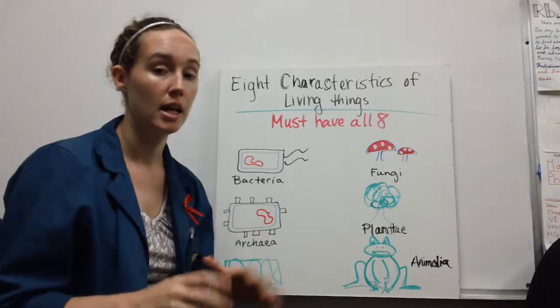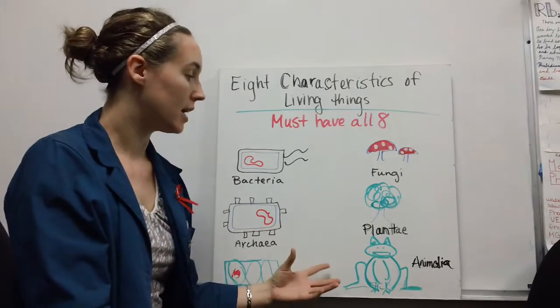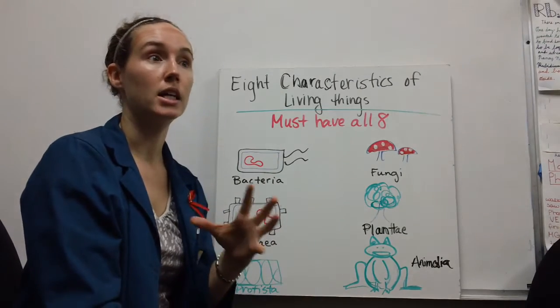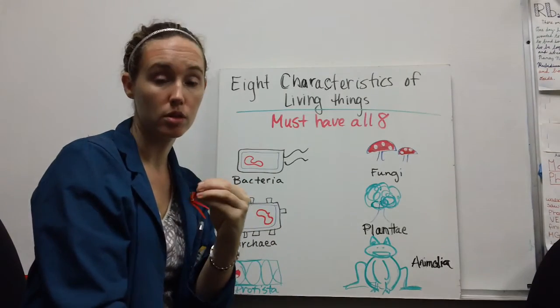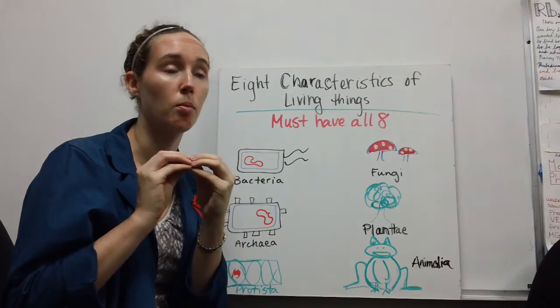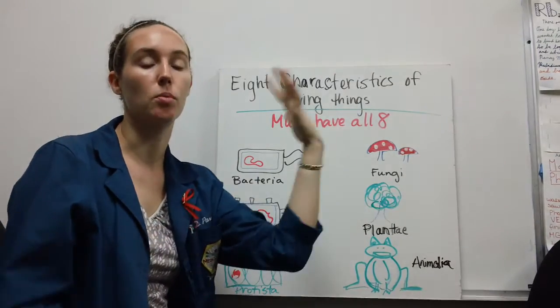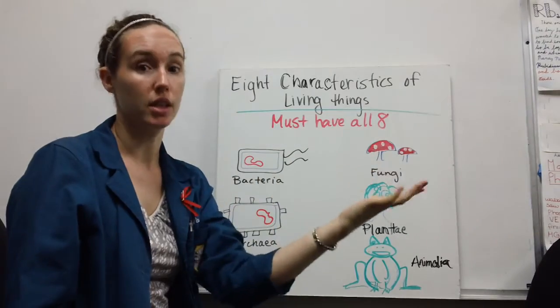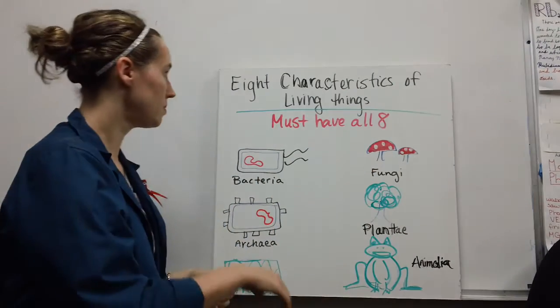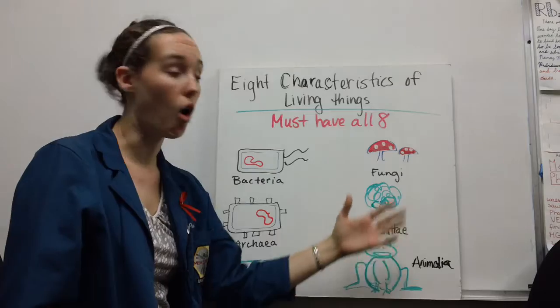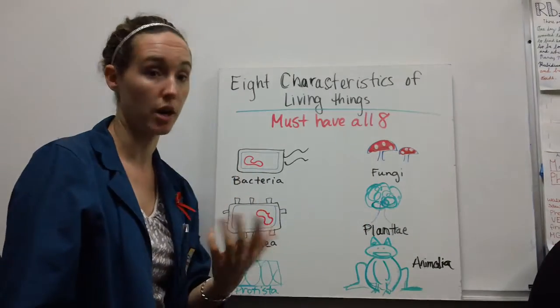Animalia takes us from corals, the tiniest least complex animals, all the way up to mammals, the most complex of the animal kingdom. These are the characteristics that every organism in these six kingdoms share.